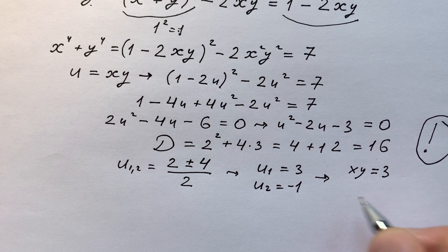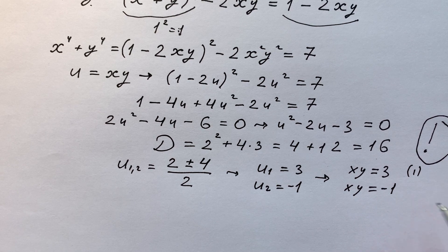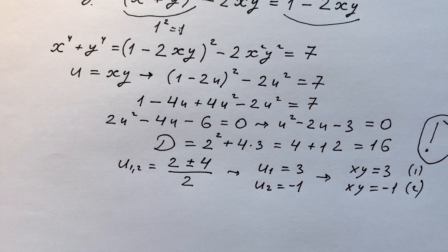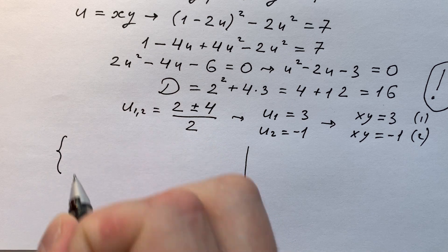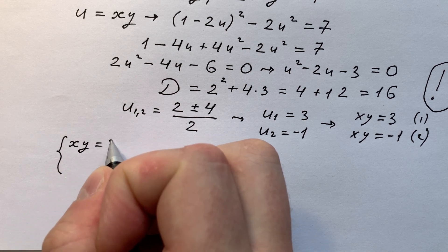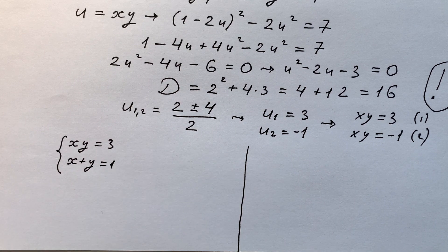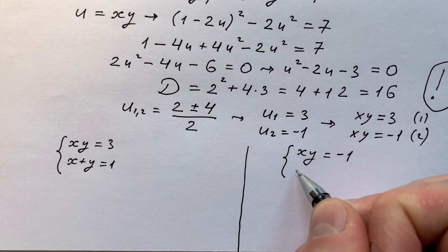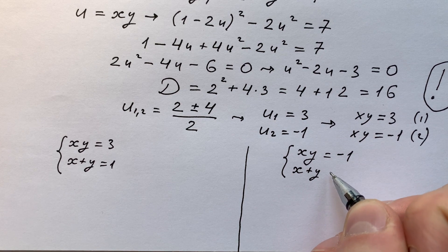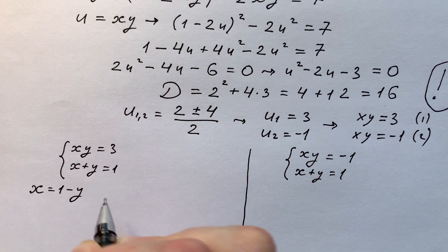So either xy equals 3 or xy equals minus 1. We now have two systems of equations. The first: xy = 3 and x + y = 1. The second: xy = -1 and x + y = 1.